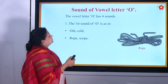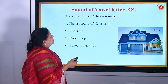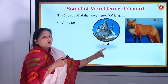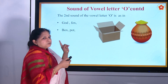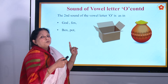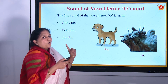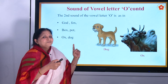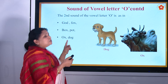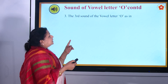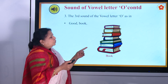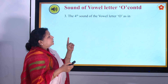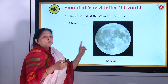The second sound is O as in god, fox, ox, and dog — it cannot be 'dag', it is 'dog' — D, O, G. So the second sound is O. The third sound is 'oo' as in good, book, look. The fourth sound is 'oo' as in moon, room.